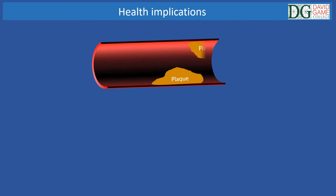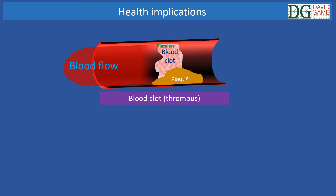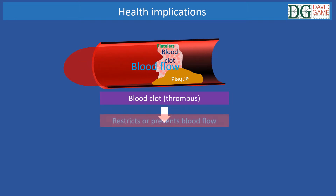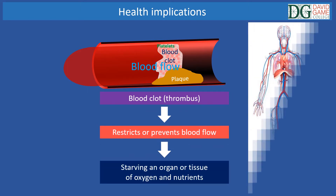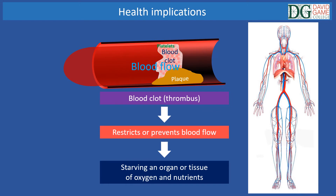If the plaque ruptures, platelets come into contact with the underlying tissue and calcium deposits, stimulating the formation of a blood clot or thrombus. This can restrict or prevent blood flow through the vessel, thus starving an organ or tissue of oxygen and nutrients. If this happens to the coronary arteries, it causes ischemia or a heart attack, while if this happens to the artery carrying blood to the brain, it causes a stroke.